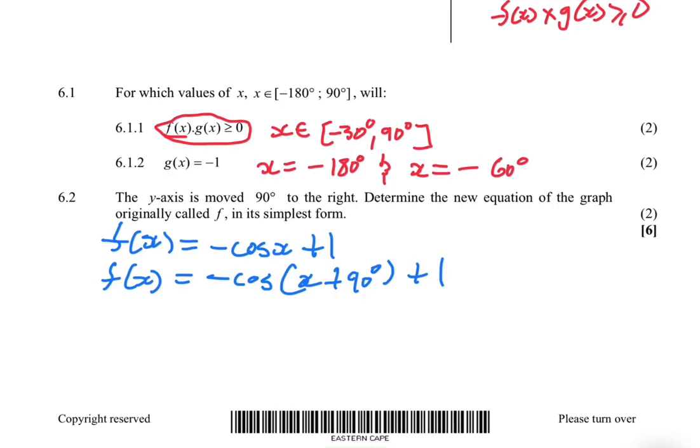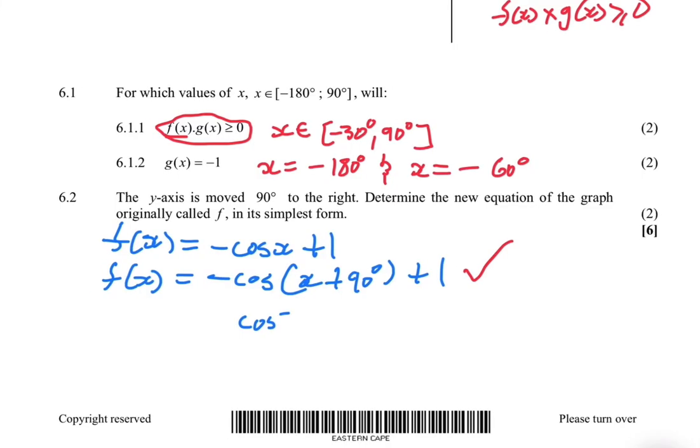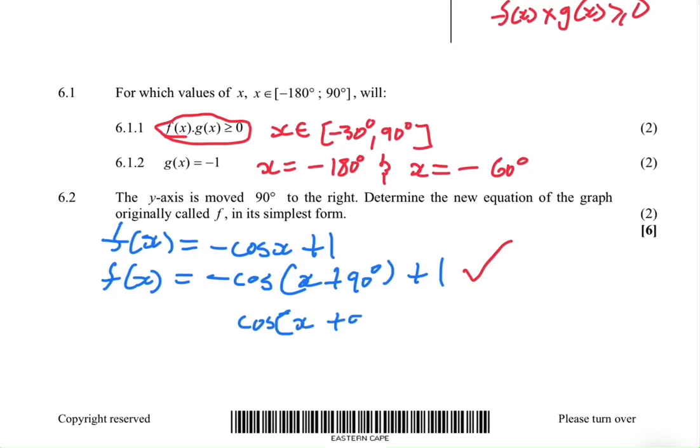And then now this is our new equation for the graph originally called f. We have moved it 90° to the left because y is moving 90° to the right. But the question says in its simplest form. This is not its simplest form, but if you manage to get here, you can get one mark of the two.